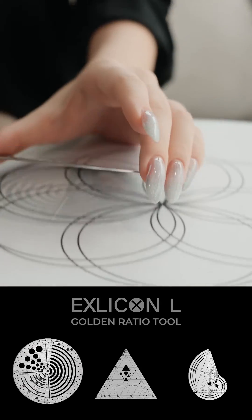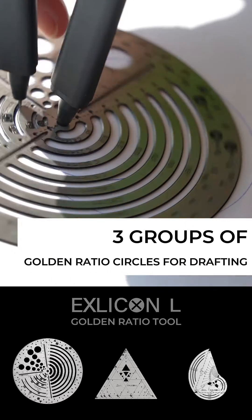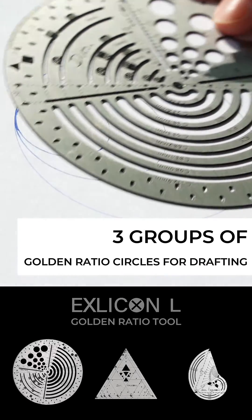With the circle tool, you can create 112 circles with an array of radius sizes. Draw three groups of golden ratio circles more easily for drafting.